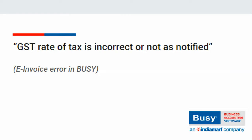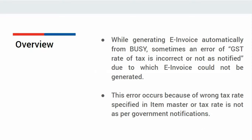While generating e-invoice automatically from Busy, sometimes an error of 'GST Rate of Tax is Incorrect or Not as Notified' occurs, due to which e-invoice could not be generated. This error occurs because of a wrong tax rate specified in the item master, or the tax rate is not as per government notification. Let us see this error in Busy and its possible solution.